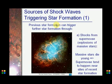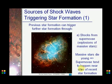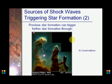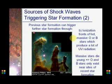This is an example of a nebula where stars are being formed because it is very dense and a shock wave is coming towards it. Previous star formation can trigger further star formation through shock waves from supernova explosions or massive stars. Massive stars die young, so supernovas tend to happen near sites of recent star formation, causing clouds to collide and heat up. Ionization fronts of hot massive O or B stars produce a lot of UV radiation.